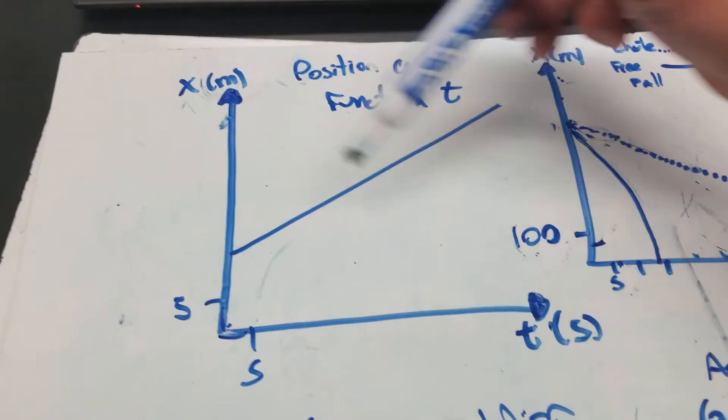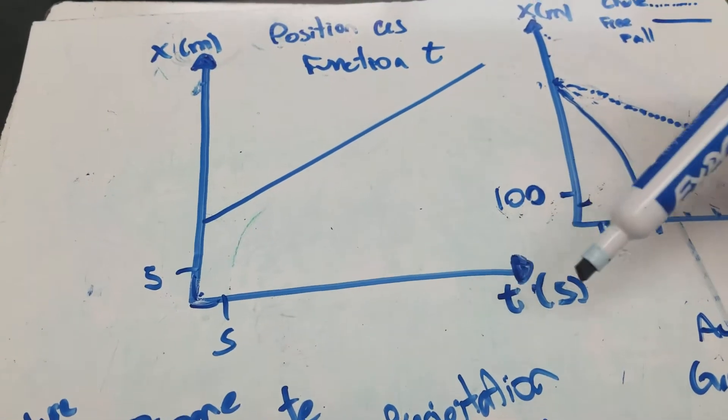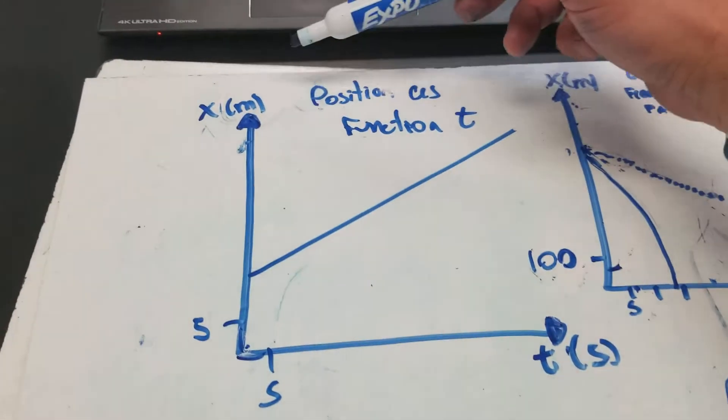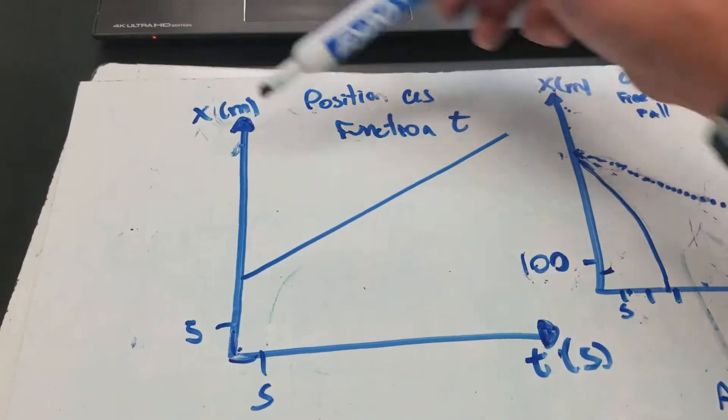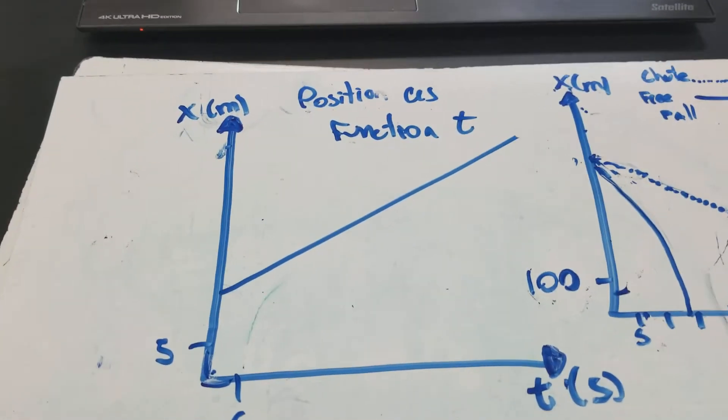So I also have a label for every axis. This one is labeled X for position, and this one is labeled T for time, and I have in parentheses units for each of the axis. So these are some basics that you have to have.